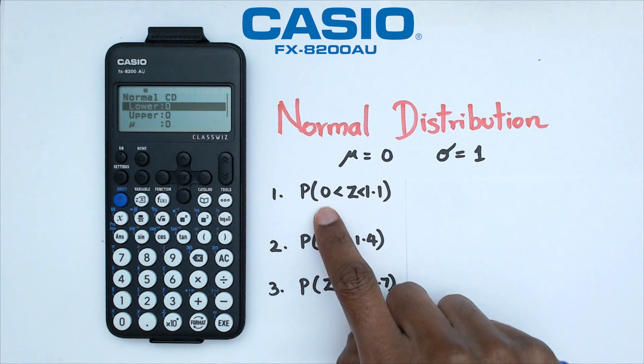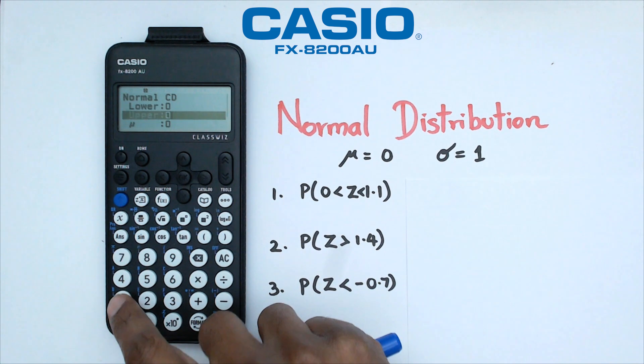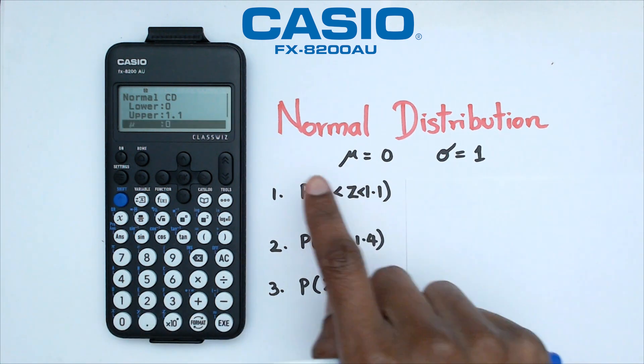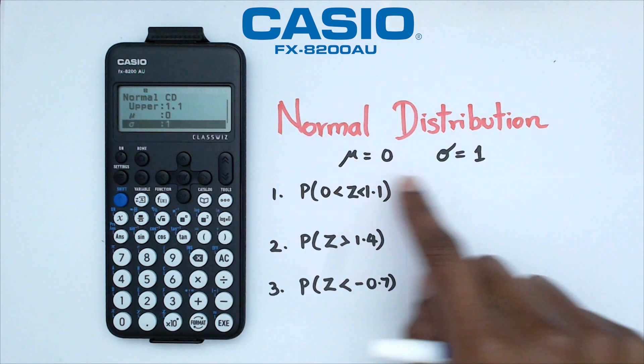Now here our lower limit is equal to zero. So we're going to put lower limit, we're just going to leave it as zero. Upper limit is 1.1. Mean is zero. Then our standard deviation is one.